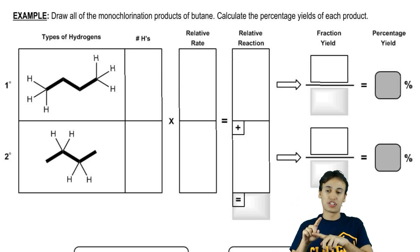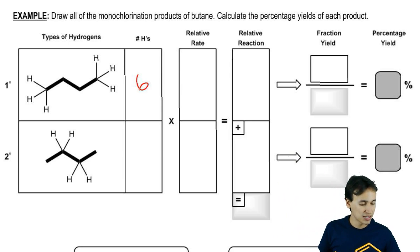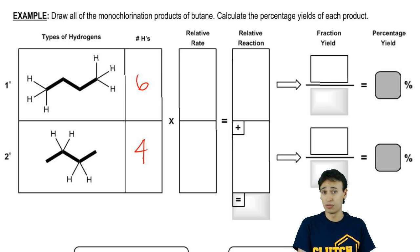What we can see is that after counting them up, you actually have six primary Hs and you have four secondary Hs. Does that make sense so far? Pretty easy.